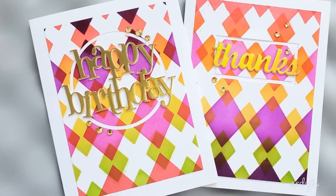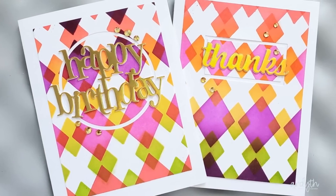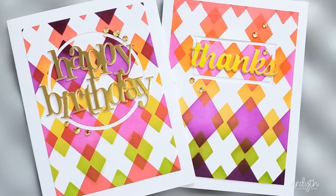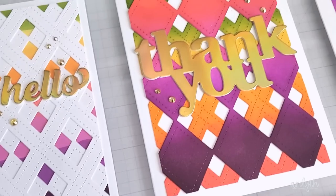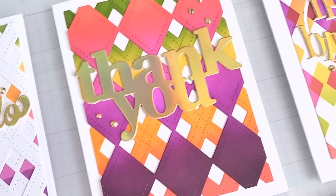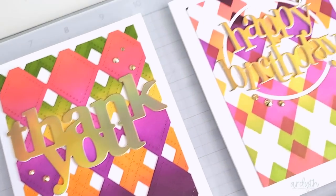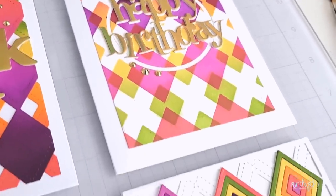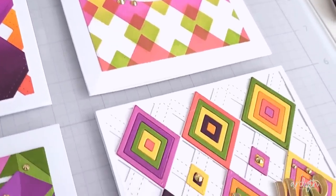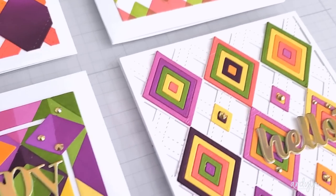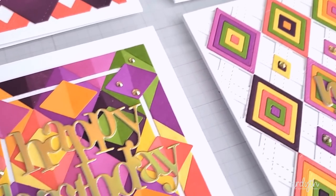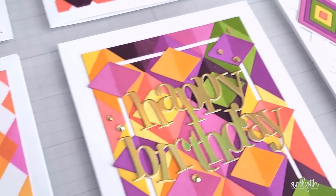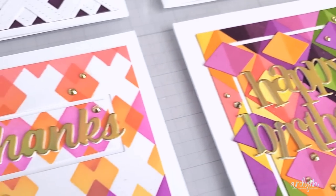I used my Essential Shapes dies from Ellen Hutson to add some negative frames to draw the eye into my stacked up die cut sentiments. On all my cards today I used Inca Gold cardstock from Tonic for my stacked up die cut sentiments. It's a satiny gold with an iridescent shine in it and it almost glows in real life. My Crafty Meraki Enchanted Forest gems match it almost perfectly. Again, a gold base with a pink and green flash in the light. So pretty.